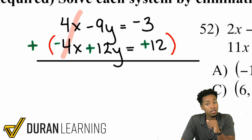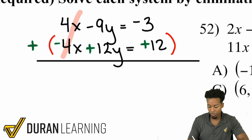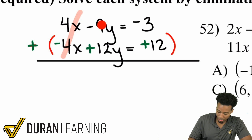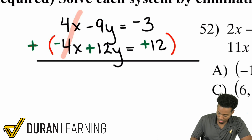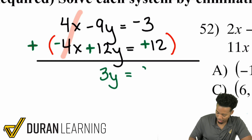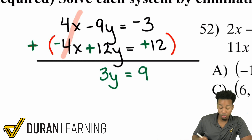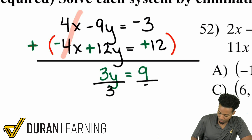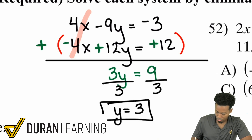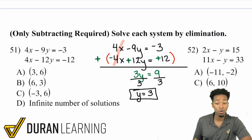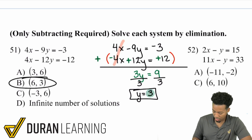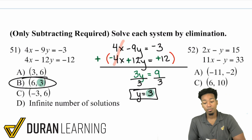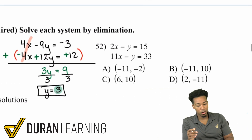When you add with that distributed negative, negative 9y plus 12y gives you 3y, and negative 3 plus 12 gives you 9. So we have 3y equals 9. Divide both sides by 3, giving us y equals 3. Since answer choice B is the only one where y equals 3, we're good — no more work needed.